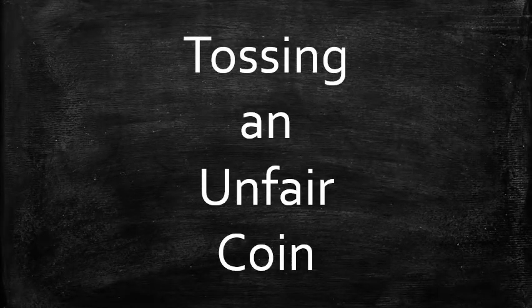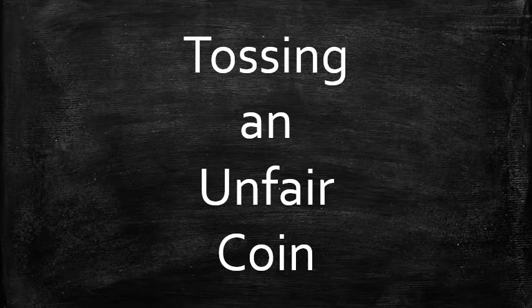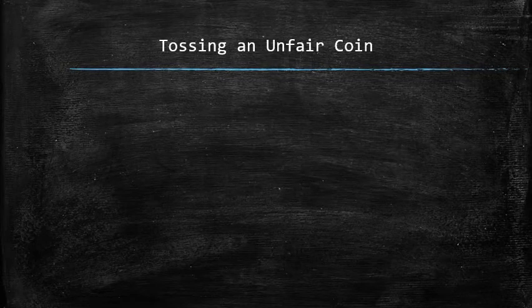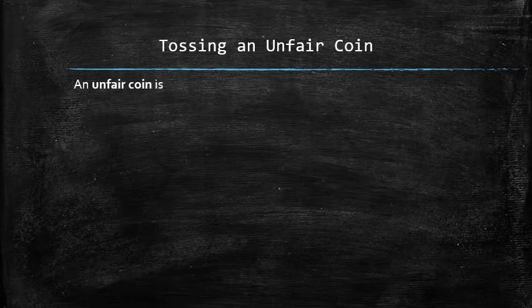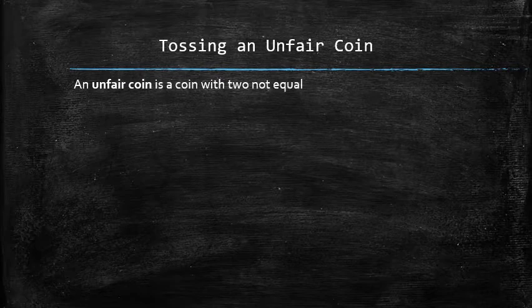Next, we will consider the experiment of tossing an unfair coin several times and finding the probability of getting a certain number of tails or heads. Let's start with the definition: an unfair coin is a coin with two not equally likely outcomes.